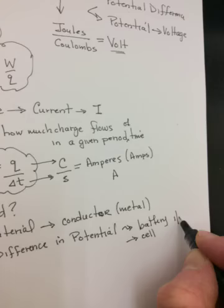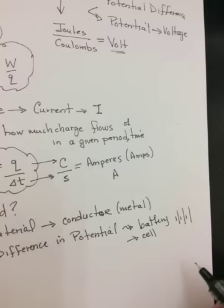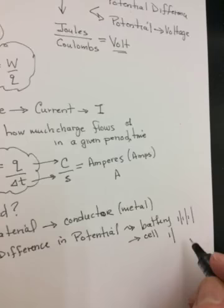Okay? The symbol for a battery or a cell is a short line, long line, short line, long line. How many just depends on how bored I am. If it's a cell, it's one short and one long. If it's a battery, it's a combo.